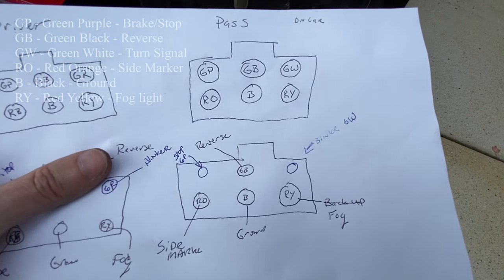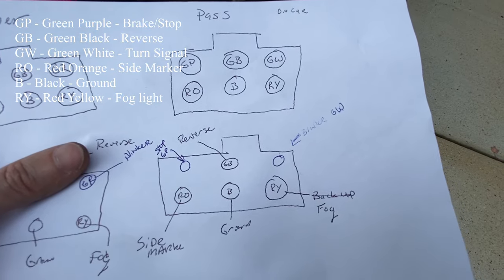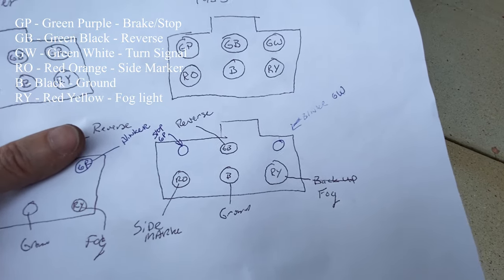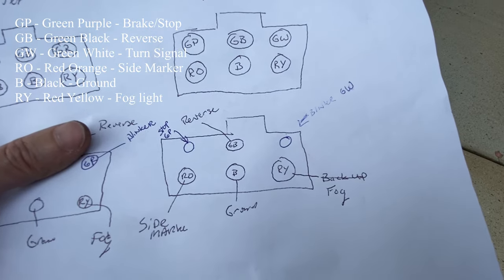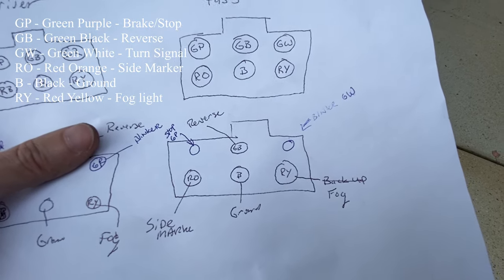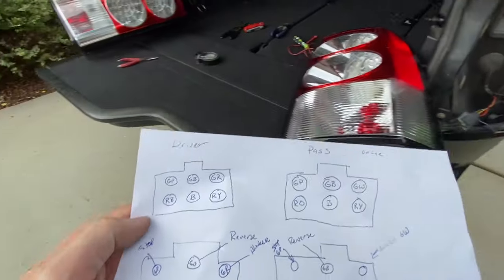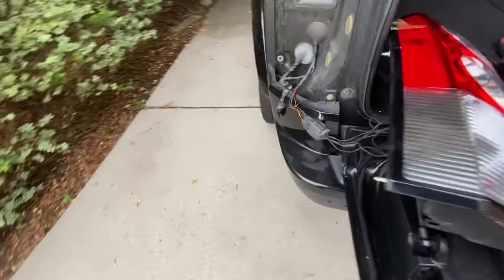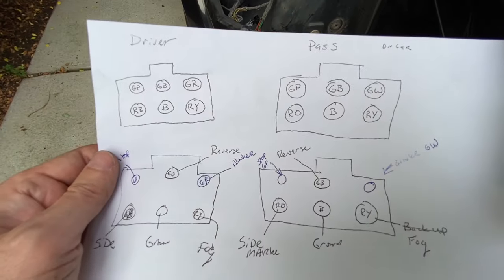Your ground is B, and your fog light is RY. It's sort of the same on the driver's side. If we go over to that side, there's only a couple wires that are different. From top to bottom: green-purple, green-brown, green-red, red-black, black, and red-yellow.